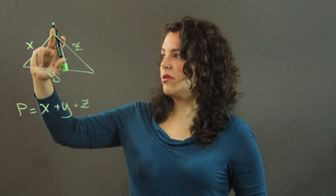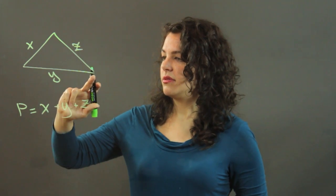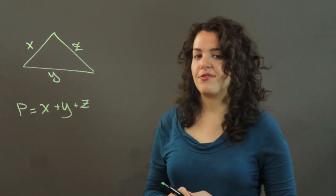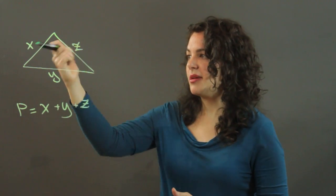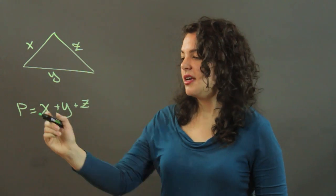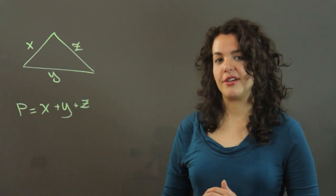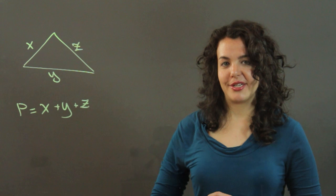giving you the length around the triangle. So if you need to find your perimeter, just label the sides of your triangle, make a sum of them, and you've got an expression for the triangle's perimeter. My name is Julia, thank you.